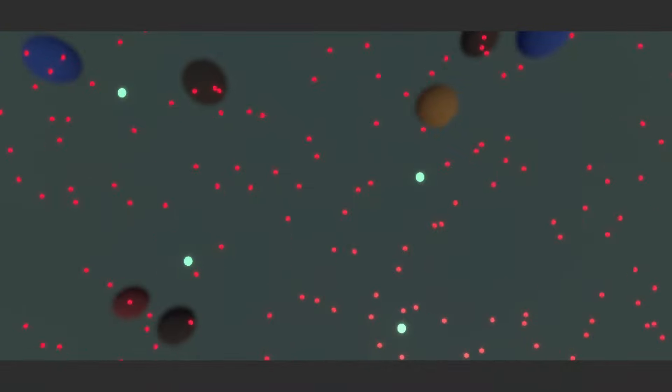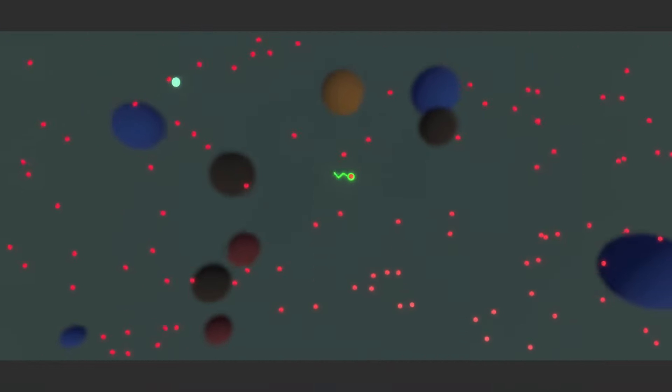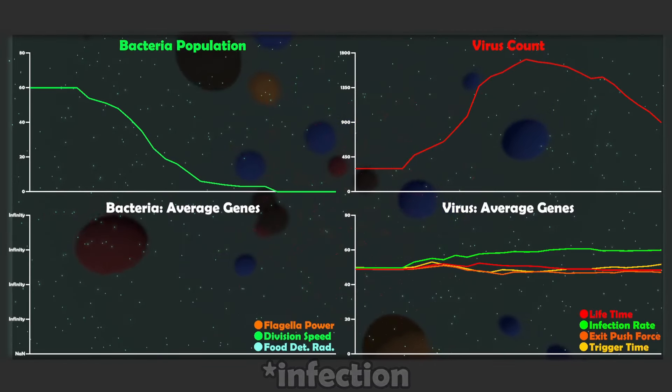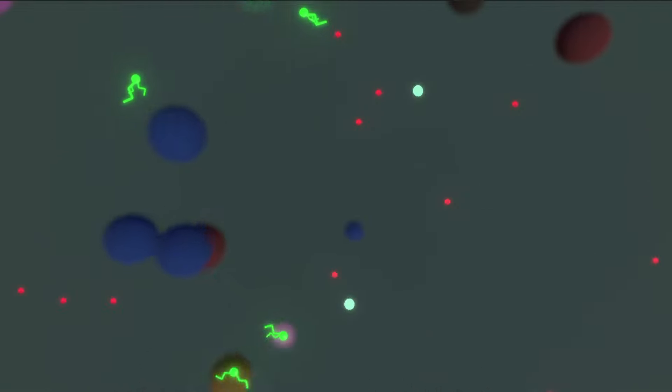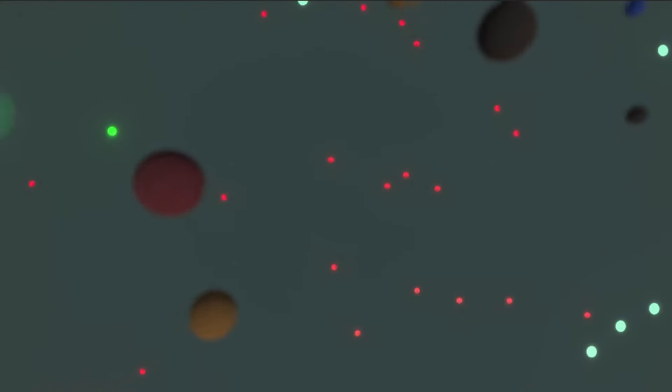So here is the very first run with the viruses and the bacteria together. And as you can see, with about 20 seconds, all the bacteria has died. The viruses are currently way too powerful. And I think it's because they have a very high chance of successful invasion. And they also spread way too much. So I'm going to tweak with the parameters to make sure it's a more balanced fight between them.